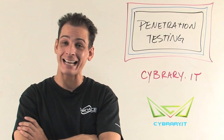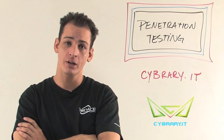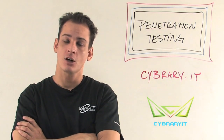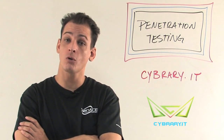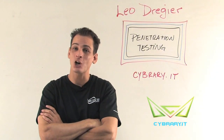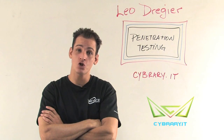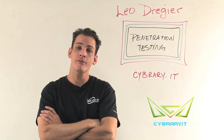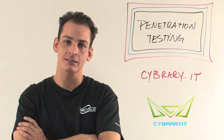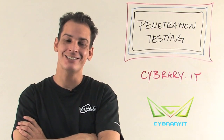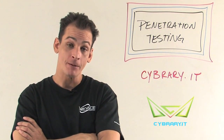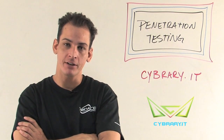We're going to cover traditional hacking life cycles — things like scanning, enumeration, pen testing, system exploits, and covering your tracks. We're also going to get into some really cool core areas, what I call the à la carte areas: things like SQL injection, wireless, buffer overflows, and hacking web servers — so much more than I can even list here.